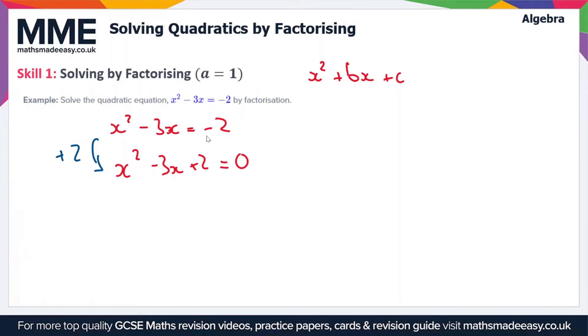Adding 2 to the right hand side has just made that into a 0, and of course we have to do the same to the left hand side. Now we have to factorise this expression.